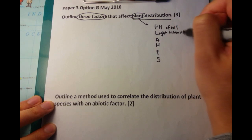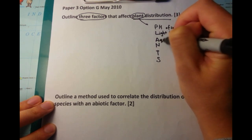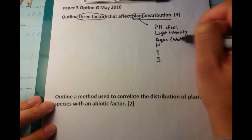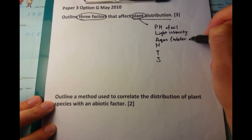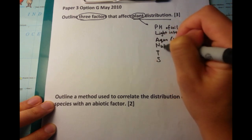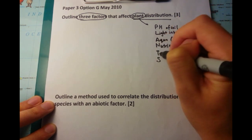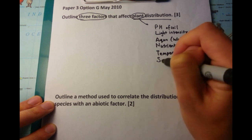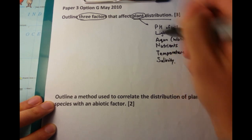P stands for pH. L stands for light intensity. A is a bit dodgy - it stands for aqua or water availability. Fourthly is nutrients. T stands for temperature, and S stands for salinity. These are the six different factors you need to know for plant distribution.